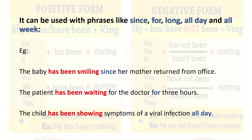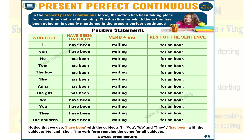'The child has been showing symptoms of a viral infection all day.' So the entire day — from morning till evening — the child has been showing symptoms. Now, the present perfect continuous tense is used when an action has been taking place for some time and is still going on, and the duration for which the action has been going on is usually mentioned.